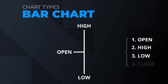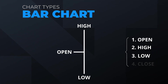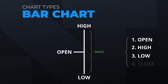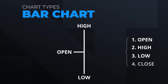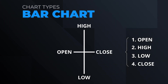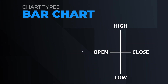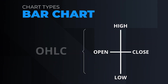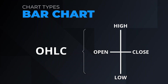The high and the low prices designate the top and bottom of the vertical bar, also known as the range of the bar. The close is marked with the hash mark to the right of the vertical bar. These bars are also called OHLC bars — open, high, low, close.